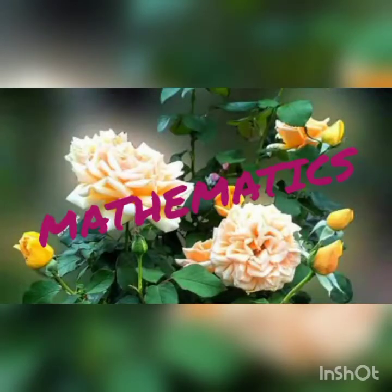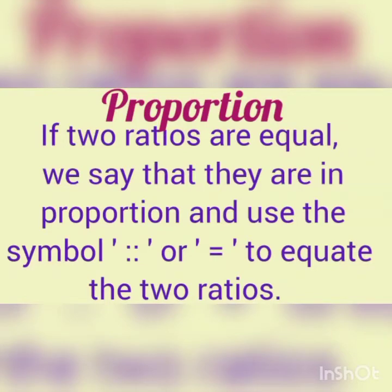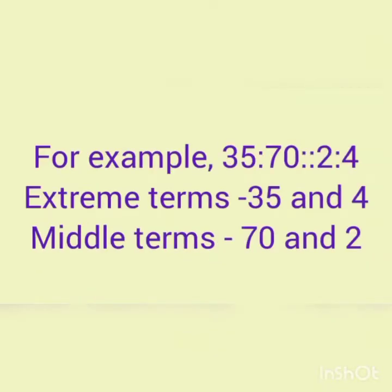Hello dear children, today we learned a new section from chapter 12: Ratio and Proportion. The new section is Proportion. Have you heard about Proportion? If two ratios are equal, we say that they are in proportion and use the symbol given to equate the two ratios. For example, 35 is to 70 is in proportion with 2 is to 4. Here, 35 and 4 are called extreme terms and 70 and 2 are called middle terms.